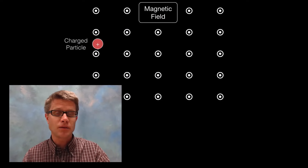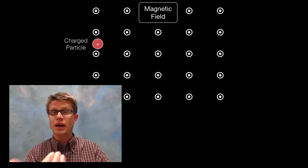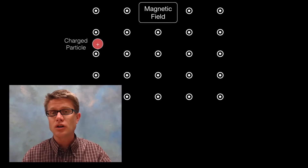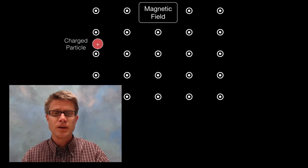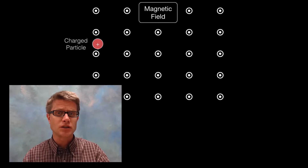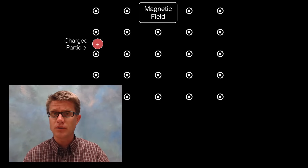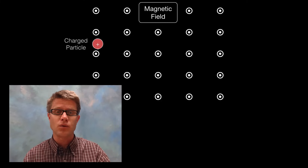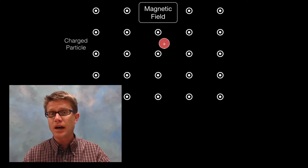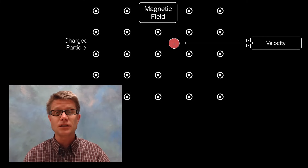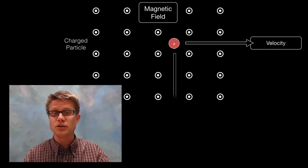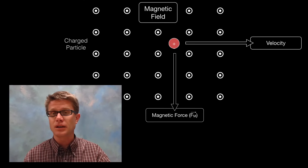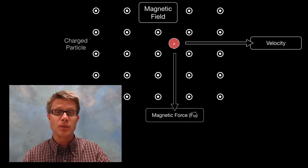So we've got a magnetic field coming out at us. If we have a charged particle with no velocity — just sitting there — is there a magnetic force? The answer is no. If it's not moving, there's no magnetic force. But as it moves it has a velocity vector, and if you're moving as a charged particle through a magnetic field then a force is going to be applied to you. We call that the magnetic force, or F sub m.